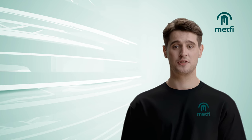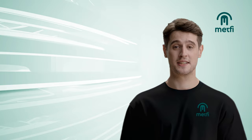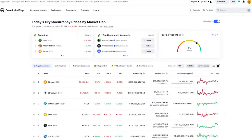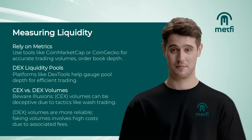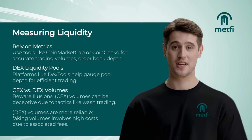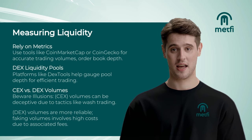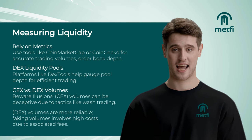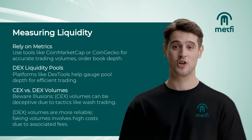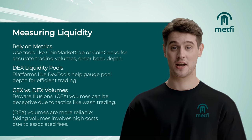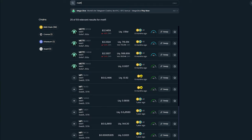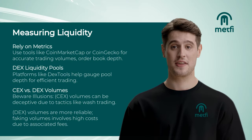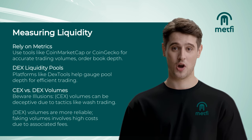How do we measure liquidity? Dive into tools like CoinMarketCap or CoinGecko to check daily trading volumes, peek at the order book's depth, observe the bid-ask spread, and check slippage — which tells you how much a price might jitter due to new orders. For DEX liquidity pools, platforms like DEXTools are your go-to. Aim for projects boasting at least a million tokens in these pools to ensure smoother trading.